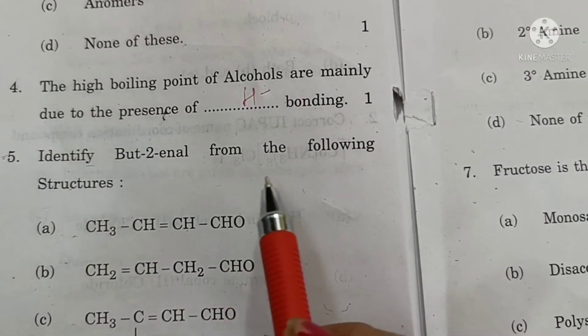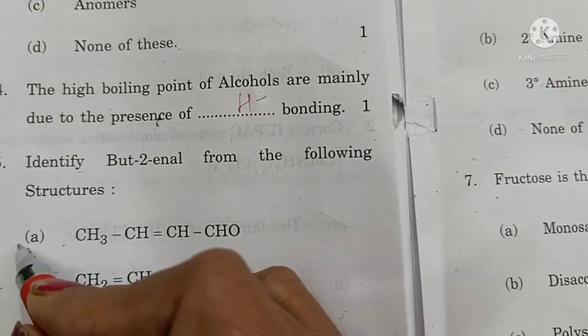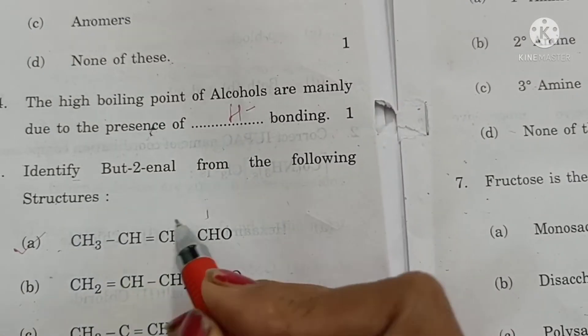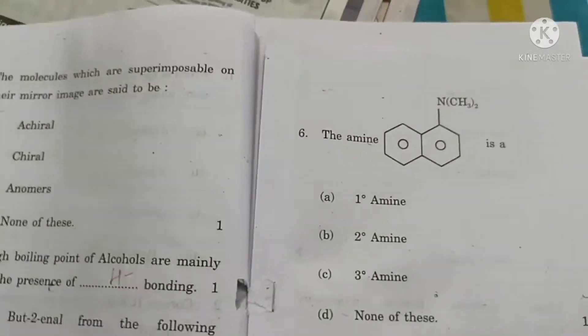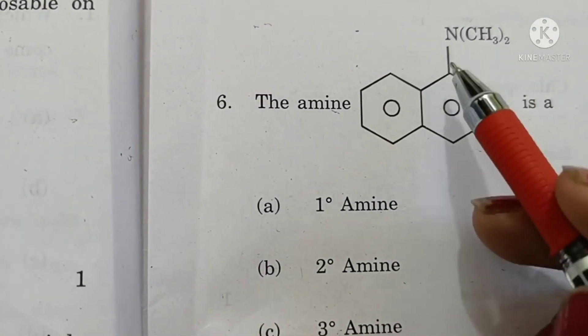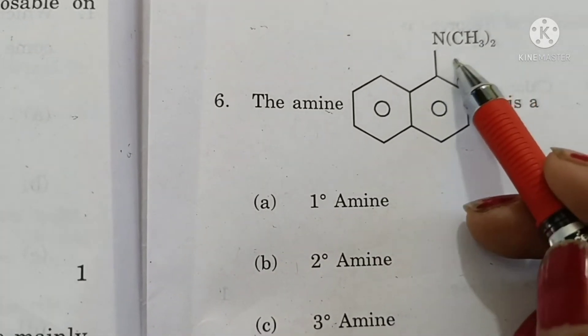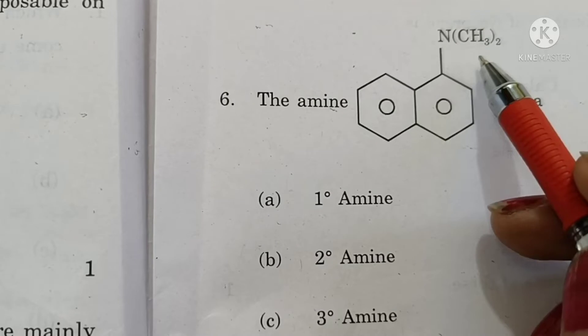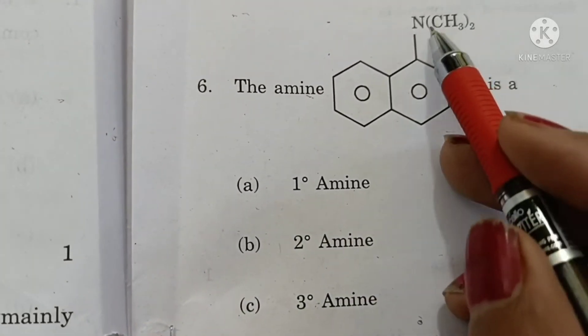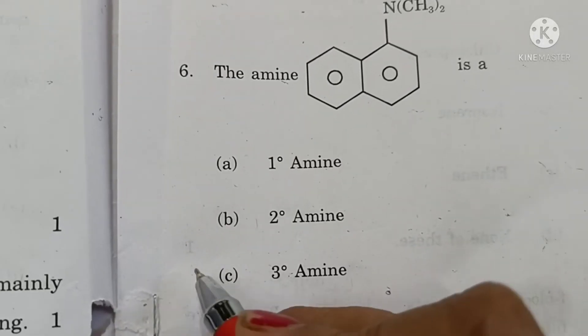Identify but-2-ene-ol from the following structure. Option A is the correct answer. The aniline naphthalene with NCH3 twice - there are three alkyl groups attached, two alkyl and one aryl group attached. So, it is a tertiary amine.